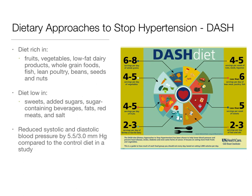A study called the Dietary Approaches to Stop Hypertension, or DASH diet study, promotes a diet rich in fruits, vegetables, low-fat dairy products, whole grain foods, fish, lean poultry, beans, seeds, and nuts, and low in sweets, added sugars, sugar-containing beverages, fats, red meats, and salt. People following this diet were shown to reduce their systolic and diastolic blood pressure by 5.5 and 3.0 respectively, compared to those in the control group.